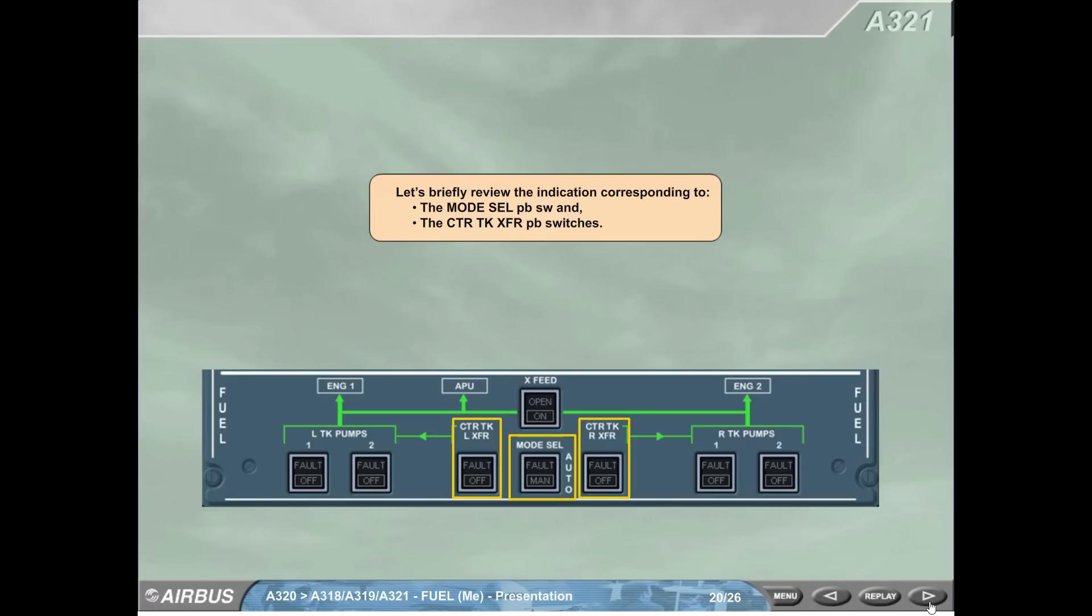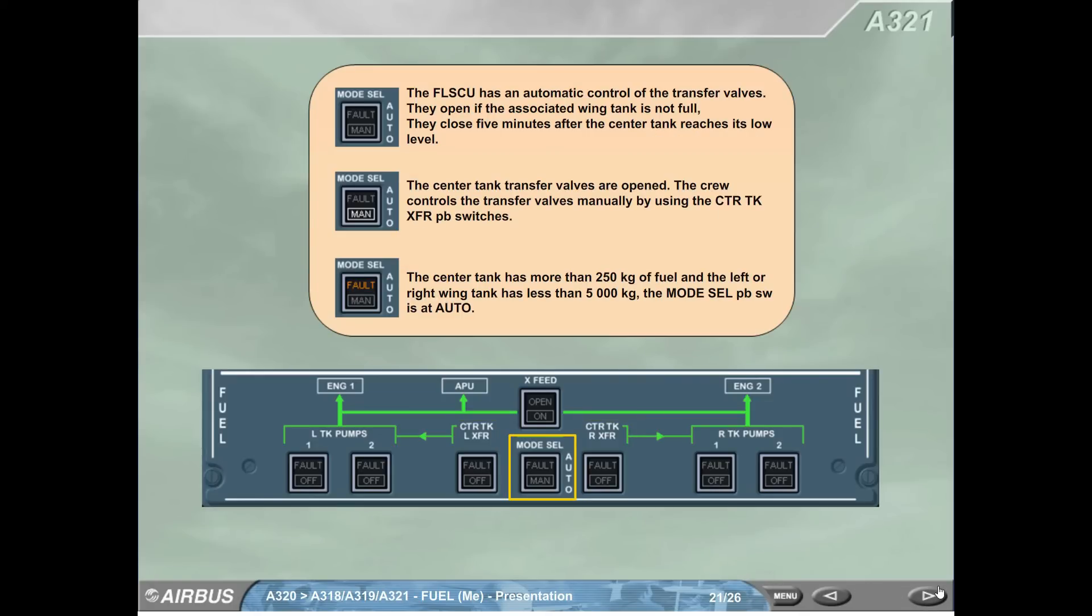Let's briefly review the indication corresponding to the mode cell push button and the center tank transfer push button switches. The FLSCU has an automatic control of the transfer valves. They open if the associated wing tank is not full, they close as five minutes after the center tank reaches its low level. The center tank transfer valves are opened. The crew controls the transfer valves manually by using the center tank transfer push button switches. The center tank has more than 250 kg of fuel and the left or right wing tank has less than 5,000 kg. The mode cell push button switches is at auto.